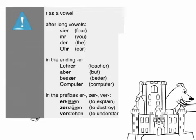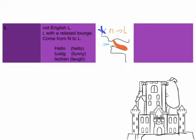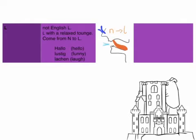If you have any questions, please write them below. Now for the L sound — depending on your mother language, this may be very easy. Your tongue is relaxed. To find the right position, pronounce an N and then hold your nose — it becomes L. There has to be air coming by. Examples: Hallo, Lustig, Lachen.